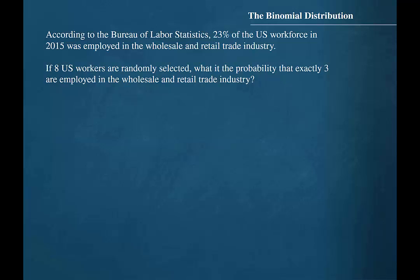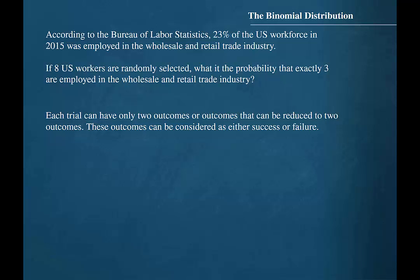Let's check and make sure that all of the criteria for the binomial experiment are satisfied. There must be a fixed number of trials — eight workers will be randomly selected, so N will be eight. Each trial can have only two outcomes: either the selected worker is employed in the wholesale and retail trade industry or not. So we will assign a success as the event that a selected worker is employed in the wholesale and retail trade industry.